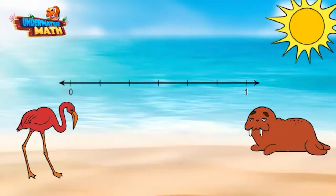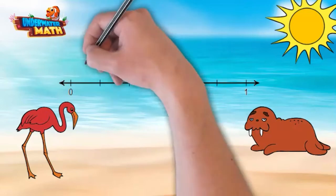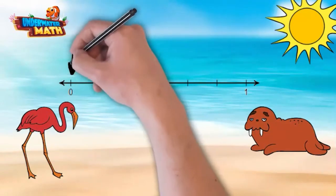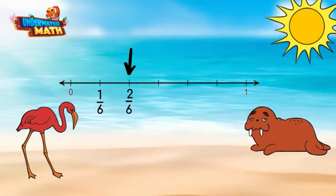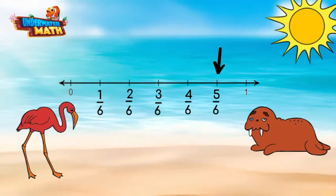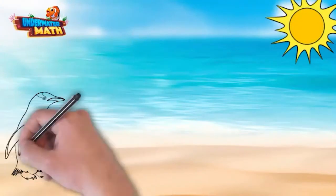Can you help represent five-sixths on the number line? Absolutely! This number line represents one mile. To represent five-sixths, we start at zero and count by sixths at each tick mark until we reach five. We put a point on the number line to represent the fraction five-sixths.